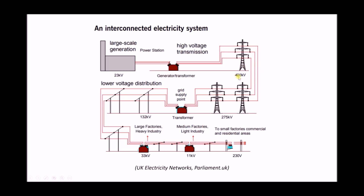The transmission network can range anywhere between 400 kilovolts and around 275 kilovolts, depending largely on the distances being covered. When we move closer to towns or built-up areas we step that voltage down to around 132 kilovolts. This is the grid supply point — the point where ownership of the network switches. The 400 kV and 275 kV side is the transmission network, owned and maintained by the National Grid. Once we step down to 132 kilovolts we're into the distribution network, and ownership and control belongs to distribution network operators.